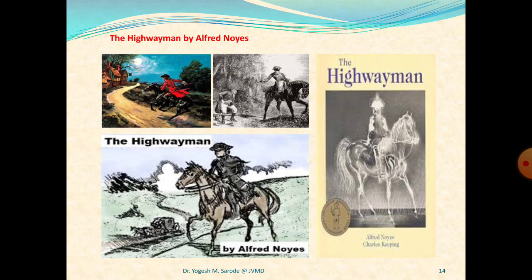Sixth stanza of part two: 'Clot-clot-clot — had they heard it? The horse hoofs ringing clear. The red-coats looked to the priming. She stood up, straight and still.' There is a sound of horse hoofs ringing clear, coming up the path from the distance just as Bess and the soldiers predicted. The highwayman is riding up the road again, just as he did in the first stanza — again an emphasis on the word 'riding'. Finally the red-coats realise what is happening, and Bess is prepared to put her plan into action.